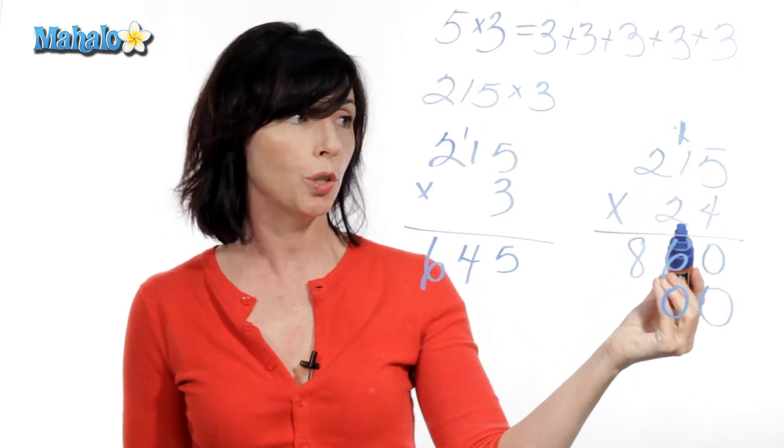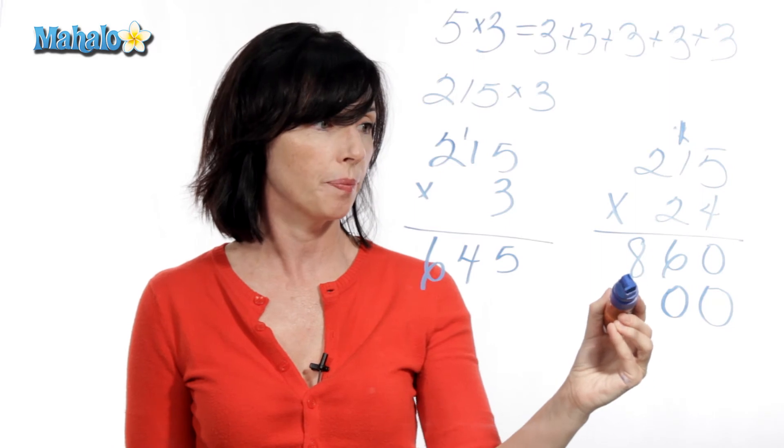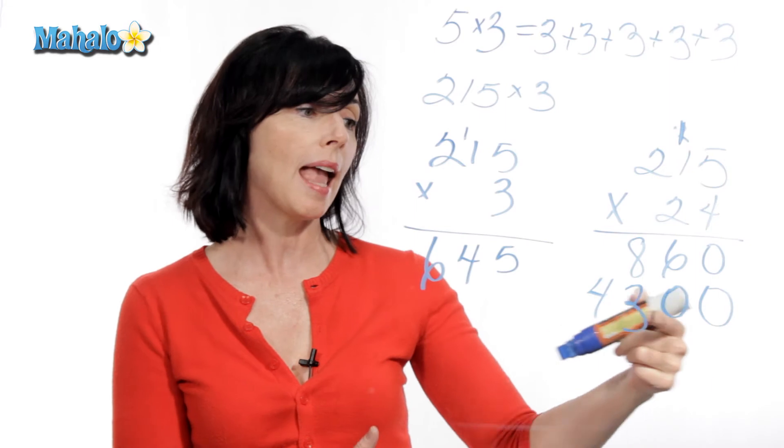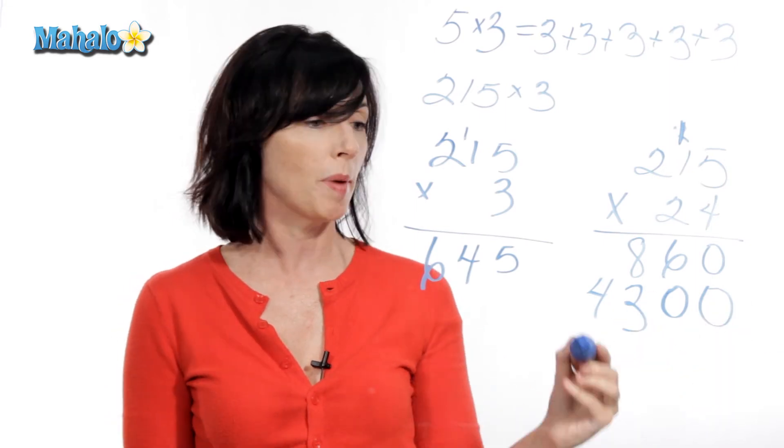One times two is two, plus one is three, and then two times two is four. Now what I do is I add up these two numbers, and that gives me my answer.